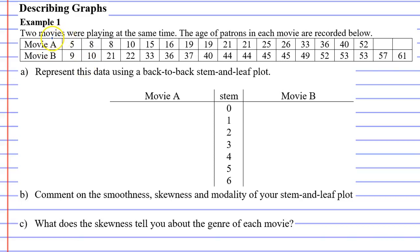Example 1: Two movies were playing at the same time. The age of patrons in each movie are recorded below. So here we see movie A with the age of its patrons, or age of people watching the movie, and movie B.